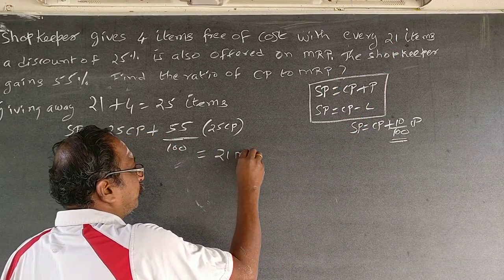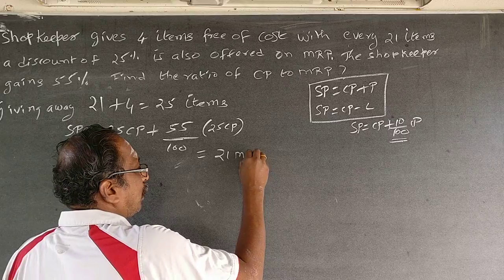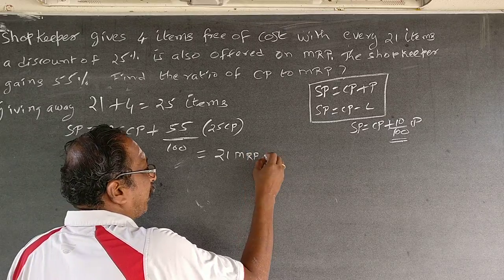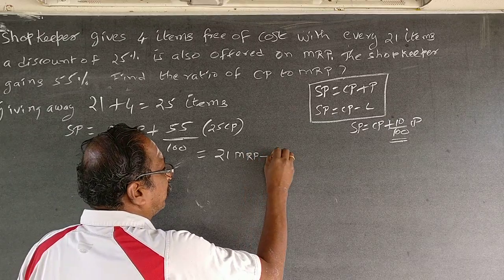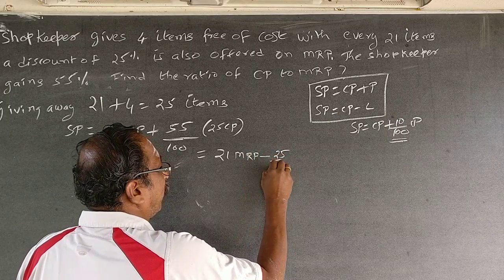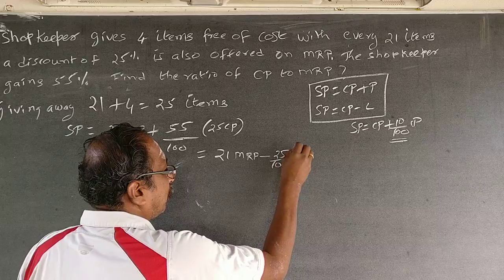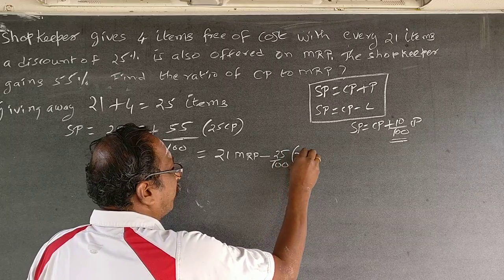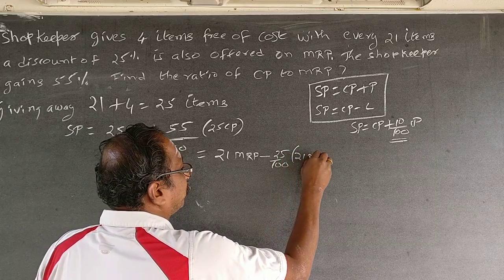So the selling price also equals 21 MRP minus a discount of 28 percent, that is minus 28 by 100 of 21 MRP.